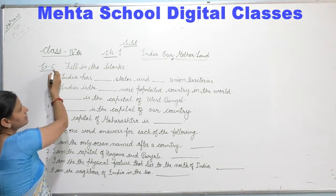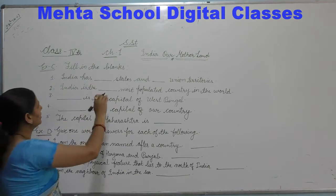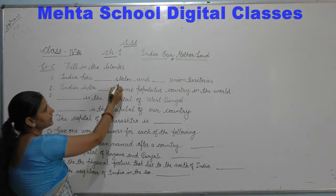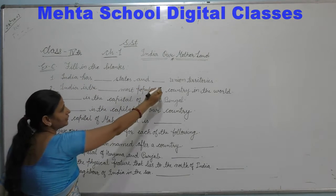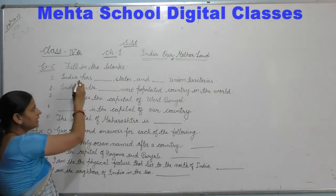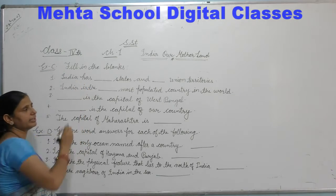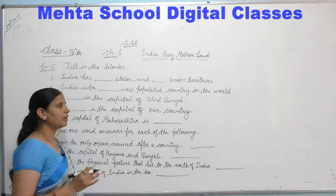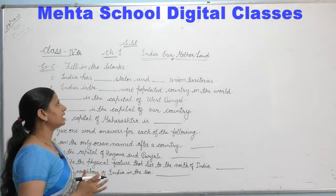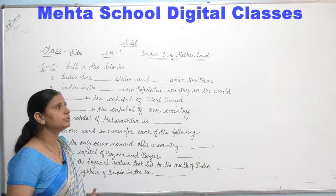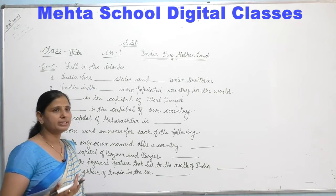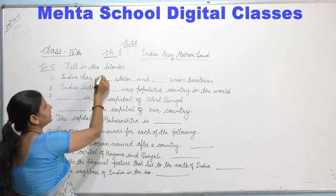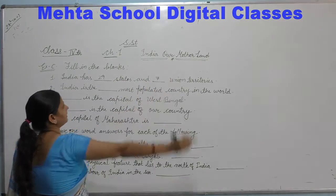Exercise number C — fill in the blanks. Our first blank is: India has dash states and dash union territories. Last year we learned that our country has 29 states and 7 union territories.